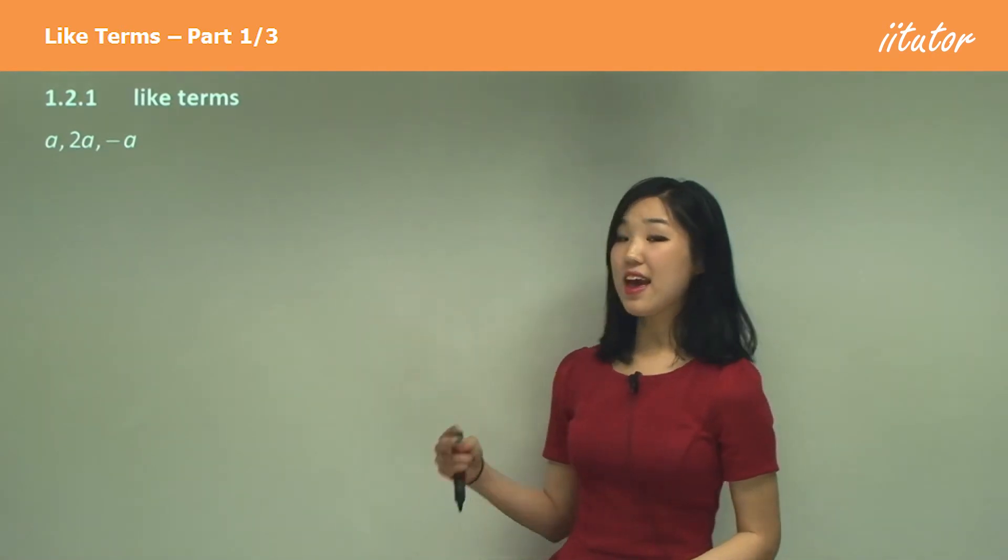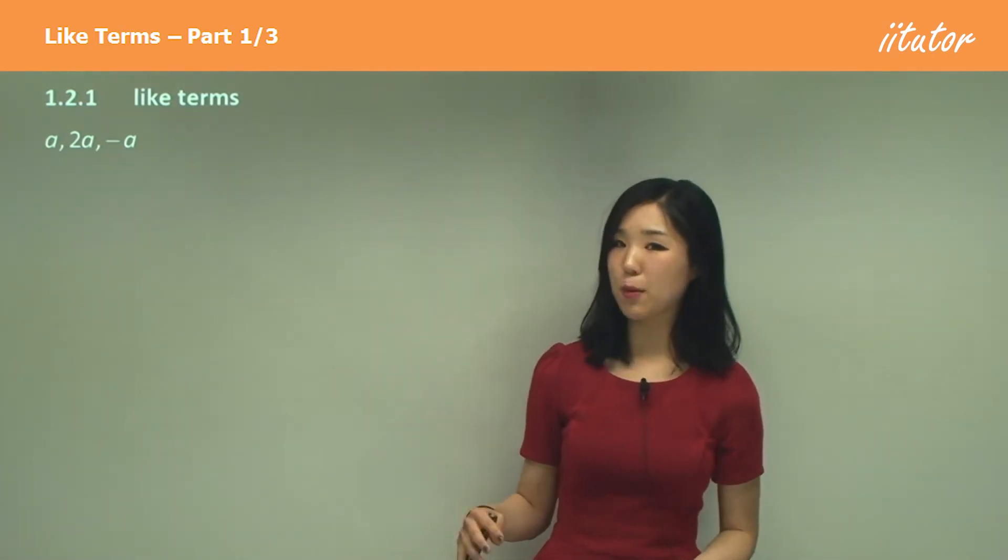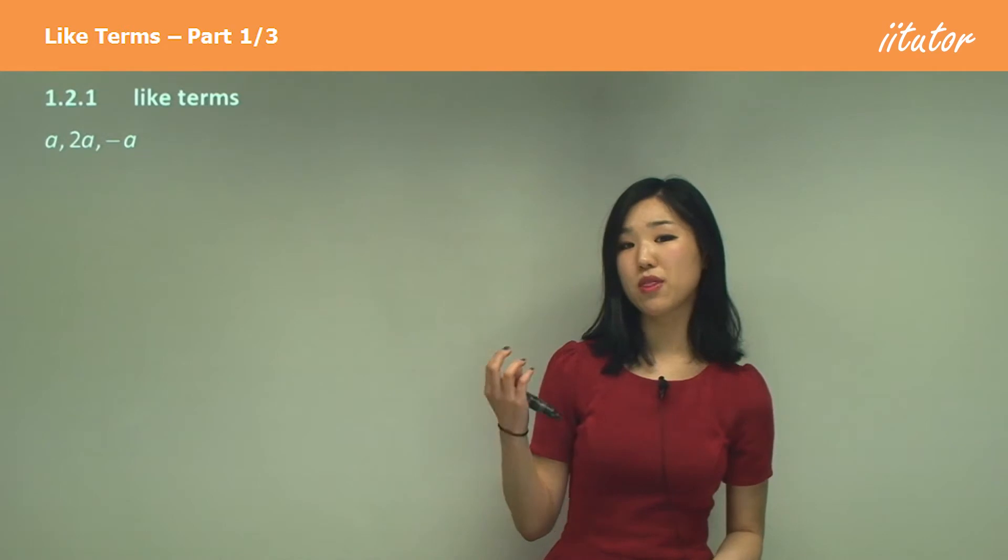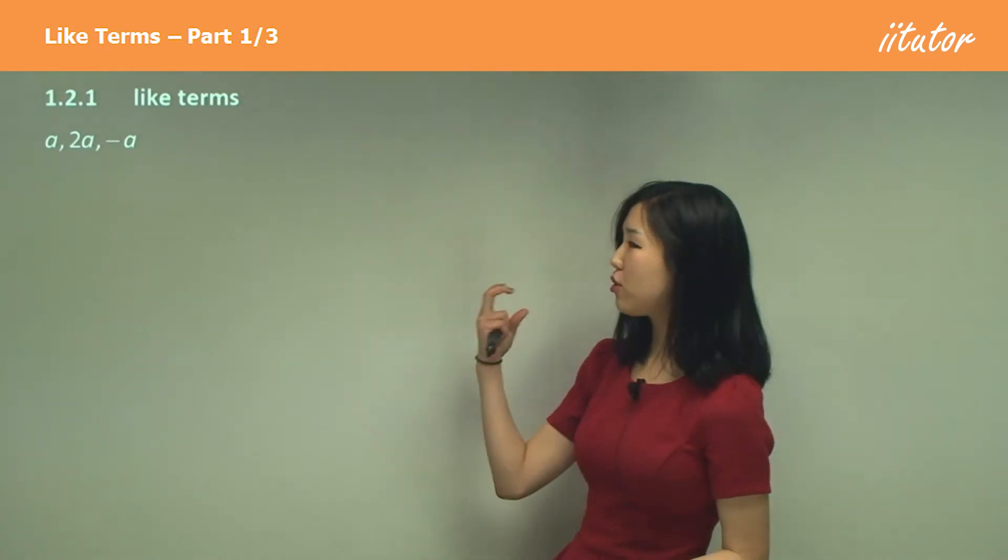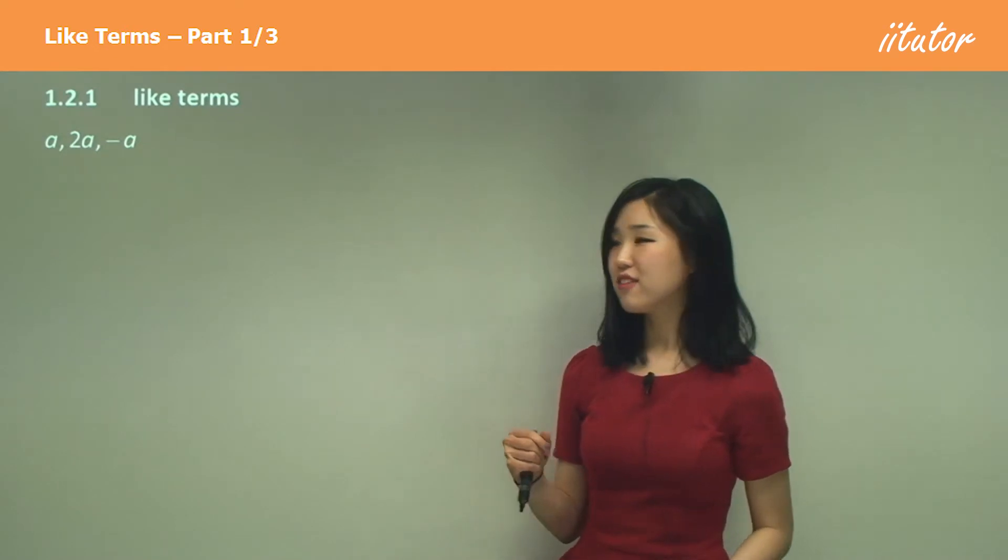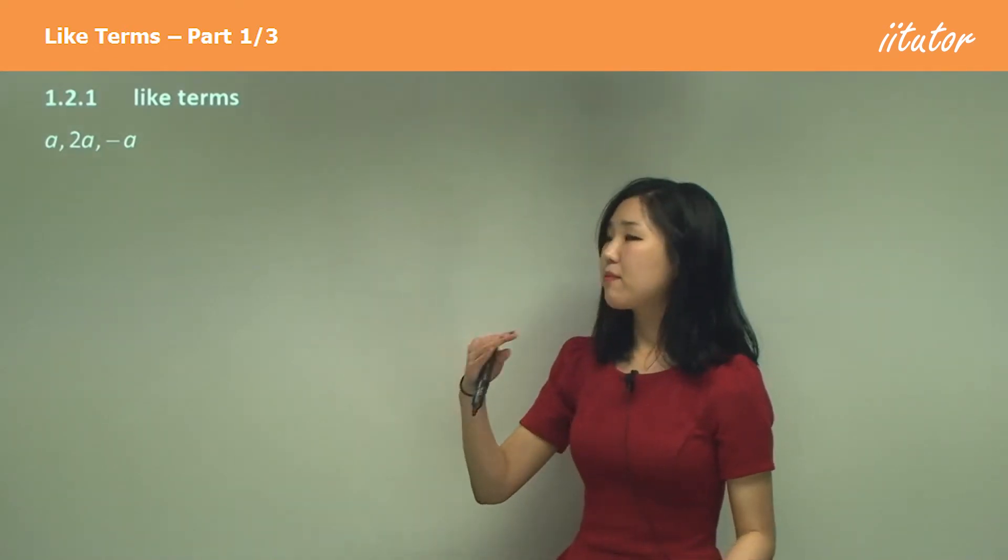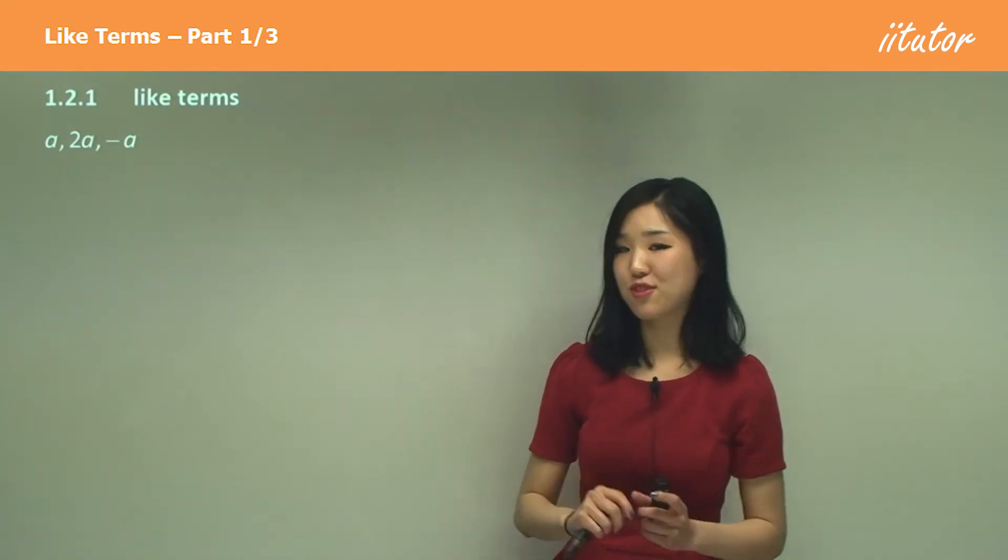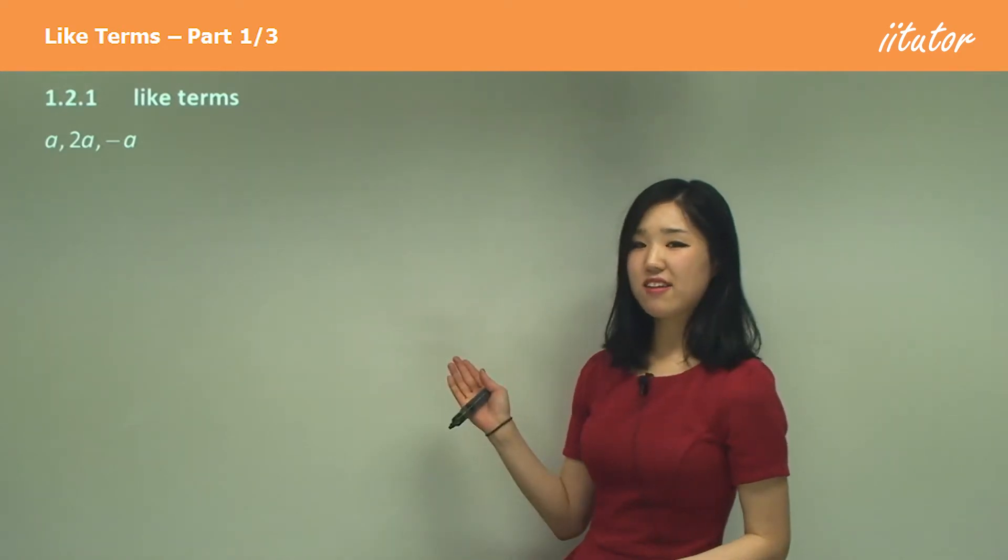A, 2a and negative a, these are like terms because they're all defined with a. So the pronumeral is all a, so that's why they're called like terms. So if I add them up, subtract them, I can gather them together, won't I? That's the idea of like terms.